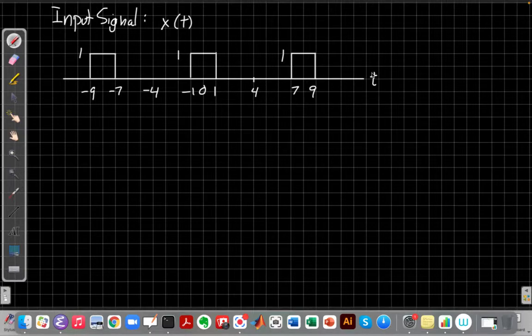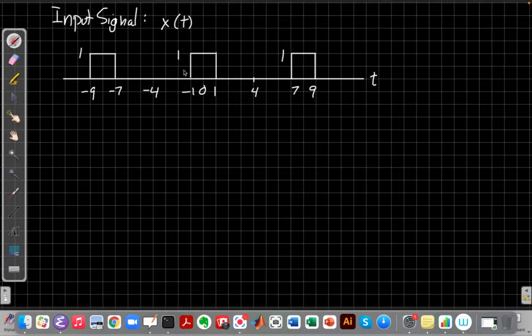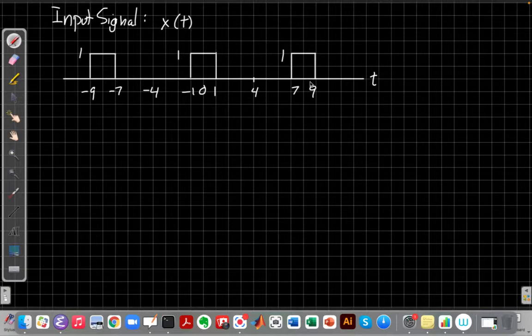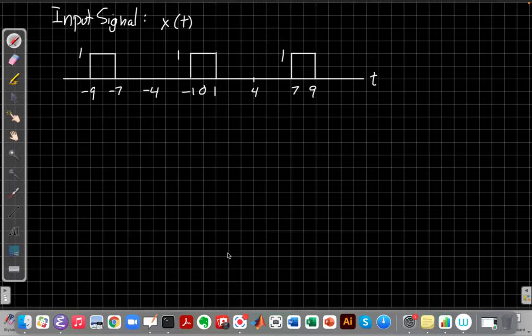For today's video, or continuing our discussion to show an example, this is my input signal x of t. It's height one, and it goes from minus one to one, and then it repeats again over here. The first thing we would do if we were going to find step one from our process was to find the a sub k's. The first thing we need to know is what's the period T, and using that, what's omega naught? I want you to pause the video for a second and practice that on your own. Find the period, find omega naught, and then come back and check your answers against mine.